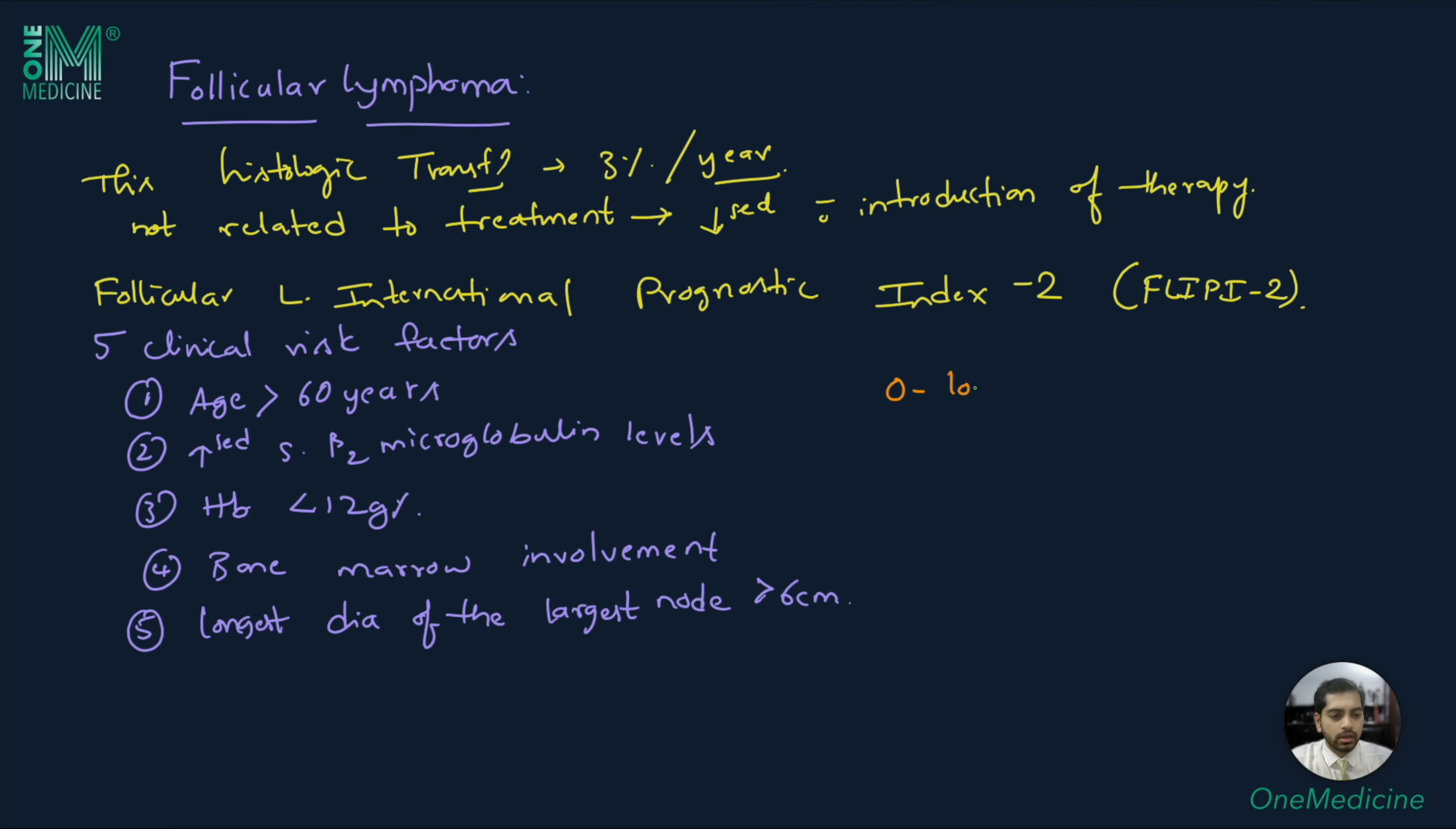If zero factors are present, then that is low risk. If 1-2 factors are present, that is medium or moderate risk. If 3-5 factors are present, that is high risk. Let's look at the five-year progression-free survivals: at low risk, it is 76-80%, at moderate risk, it is 49-51%, and at high risk, it is just 20-37%.